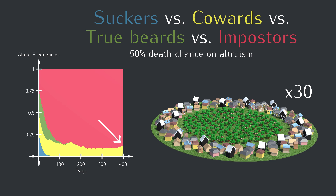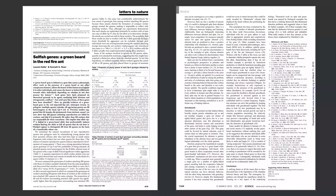So it seems like green beard altruism breaks down with even a tiny bit of complexity. And as we'd expect, we've only found a few examples in nature — they aren't literal green beards, of course, but I've added some links to papers in the description in case you want to learn more.